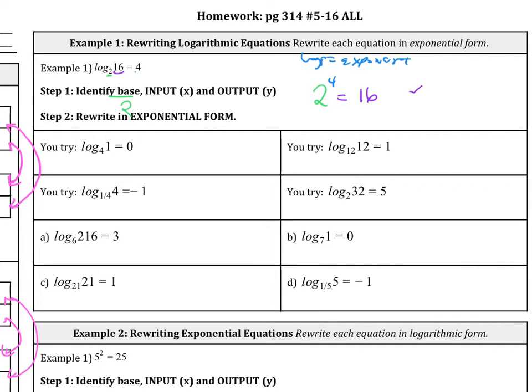So try one more. I'll try one more with this. So log base 4 of 1 equals 0. So 4 is the base. The exponent logs equal the exponent, which is 0. And then the y value is the one inside, 1. Is 4 to the 0, 1? Yes, it is. So go ahead and try the rest of these. And when you come back, I'll have the answers for you.